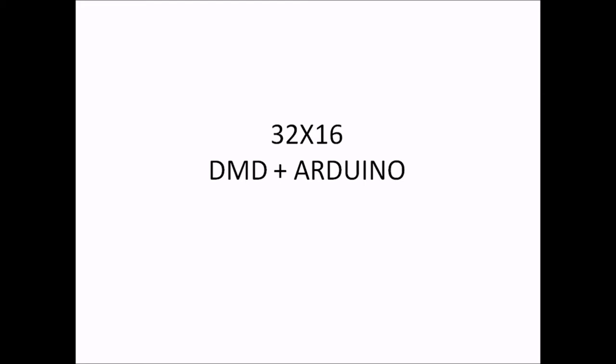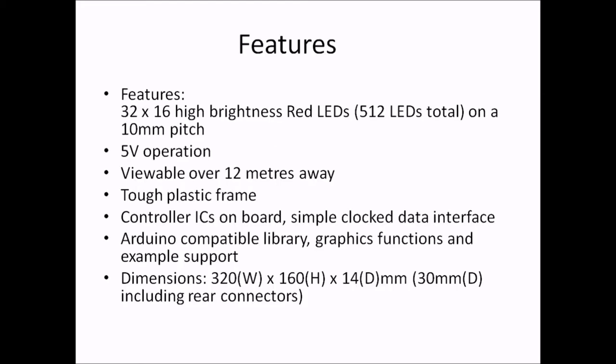We will also discuss how the pins of the DMD board are connected to your Arduino. You should know the features of the dot matrix display. This is a 32x16 high-brightness red LED board with a total of 512 LEDs. It operates at 5 volts — you can power it from your Arduino board or use an external power supply. It is visible from over 12 meters away. It has a top plastic frame, controller ICs, and a simple clock-data interface.